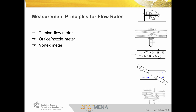The vortex shedding frequency is proportional to the flow rate of the fluid. Ultrasonic flow meters are based on the interaction of ultrasonic signals and the fluid flow. In the travel time method, the mean speed of the flow and the volumetric flow rate are determined from the difference in travel time of signals traveling upstream and downstream. For meters based on the Doppler effect, the bulk flow rate is derived from modulations of the signal frequency caused by traveling disturbances, for example in two-phase flow.